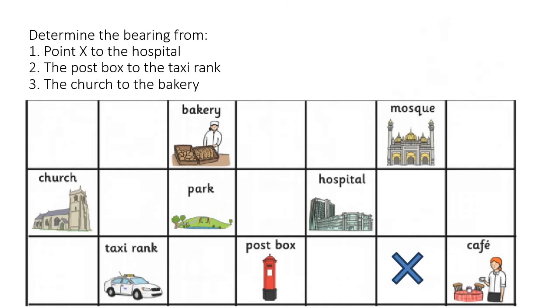Now, let's quickly do an example. So we looked at an example like this in one of our previous lessons. But this one's a bit different. It says, determine the bearing from point X to the hospital. So these bearings, we're just going to stick to the basic ones. So we know bearing is 0, then there's 90 degrees, 180, 270, and then this would come back to 360.